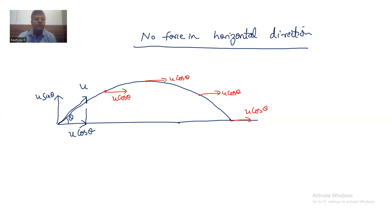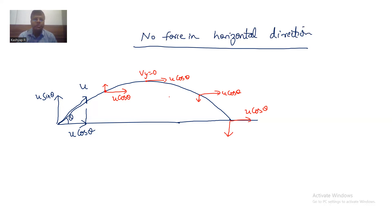The vertical component of velocity will keep reducing, and at the topmost point it will be zero, then it will again keep increasing, finally reaching its maximum value when it comes back to the ground. We will be discussing in the next class the basics of projectile motion and will try to solve some basic problems. Thank you so much for watching.